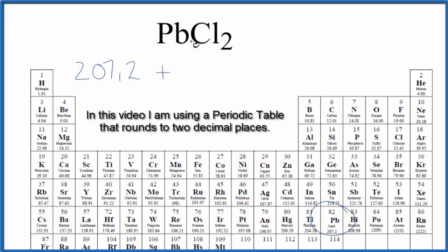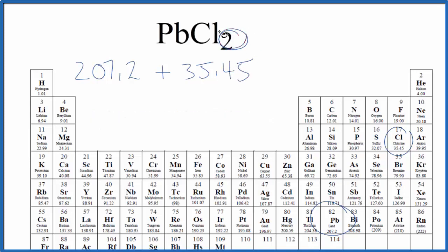Plus, we have the chlorine atom here. That's 35.45 grams per mole. We have two chlorine atoms. We're going to multiply this by two.